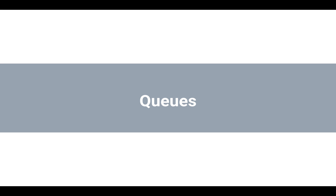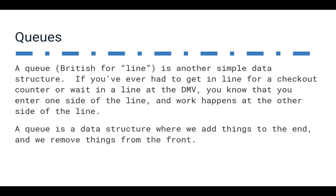Queues are another data structure we use a lot in algorithms, but we can use them for other purposes as well. A queue — if you speak American English, you probably don't hear that word very much, but in England they use it a lot. It's British English for 'line.' So if you go to the DMV or check out at a grocery store, you get in the line — you get in the queue. You basically enter one side of the queue, and the work happens at the other side. A queue is a data structure that represents this: we add things to the end, and we remove things from the front. There are a lot of times where we need to process a bunch of data in some kind of order, and a queue is a pretty good structure for doing that reasonably efficiently.